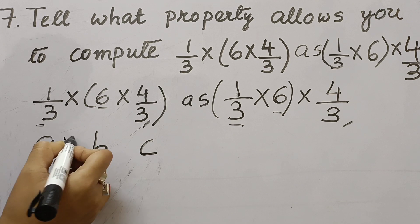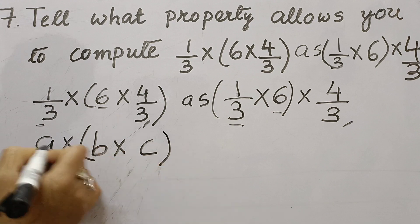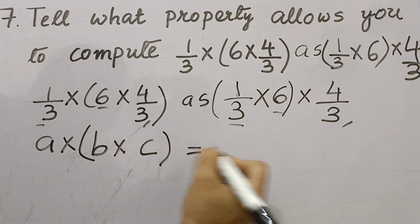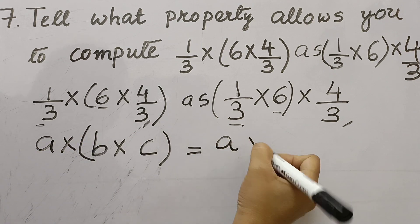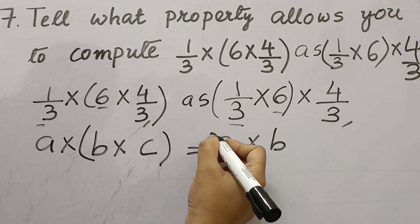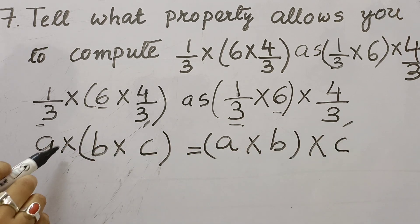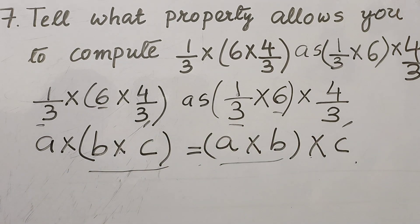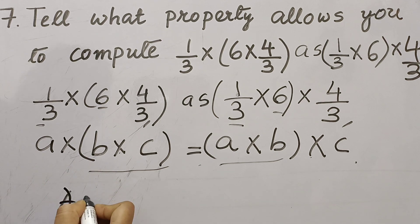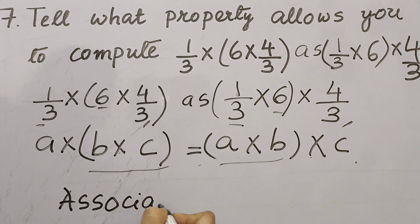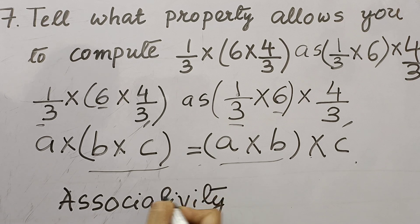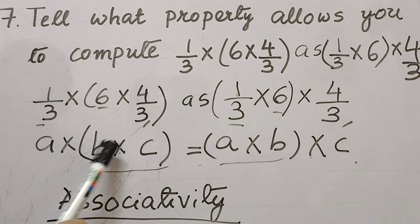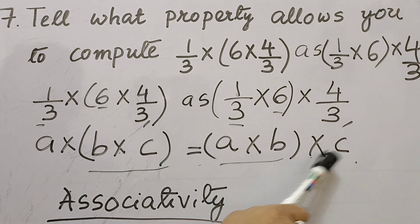So we have three numbers A, B, and C. Regrouping them as A × (B × C) = (A × B) × C is called the associative property of multiplication. This is the property that allows us to regroup factors without changing the product.